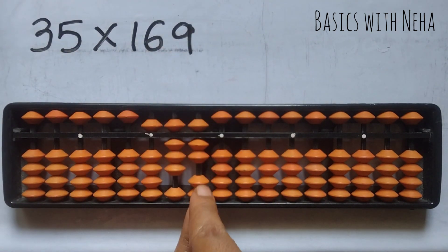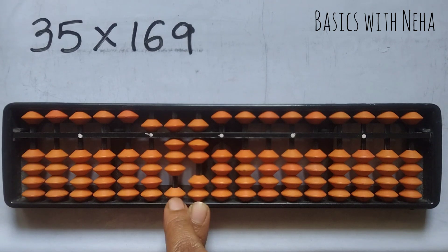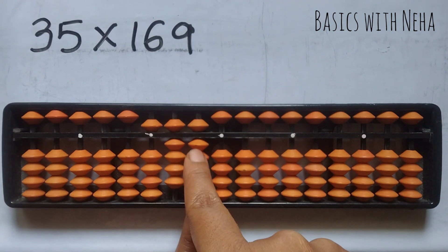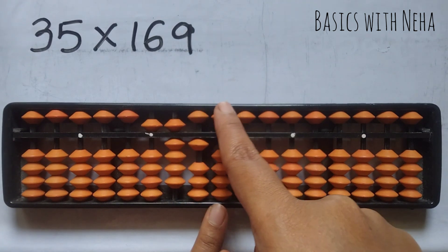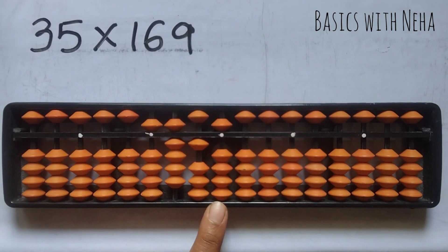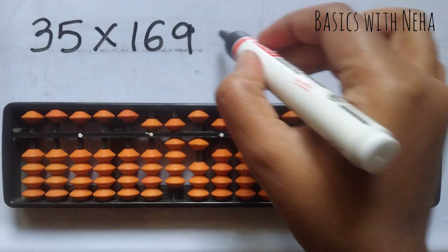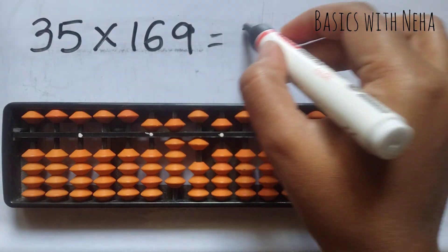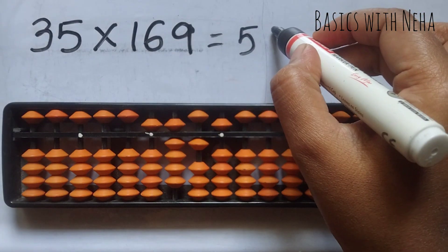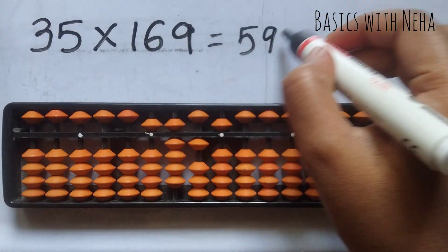5 nines are 45. To place 4 here, it is plus 10 minus 6, plus 10 minus 6, and 5. So the answer to this question is 5,915.